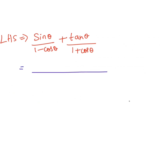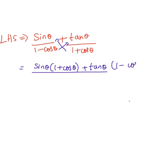After cross multiplication, it becomes sin θ into (1 plus cos θ) plus tan θ into (1 minus cos θ), all divided by (1 minus cos θ) into (1 plus cos θ).